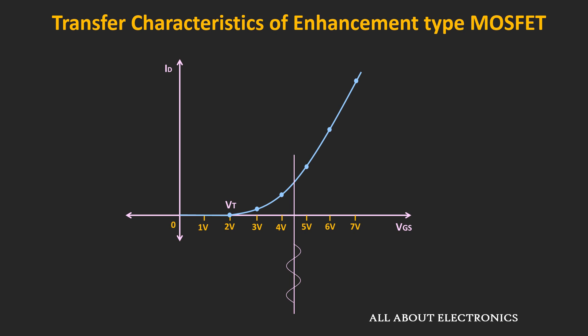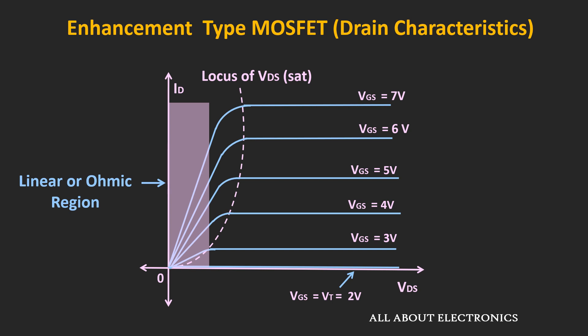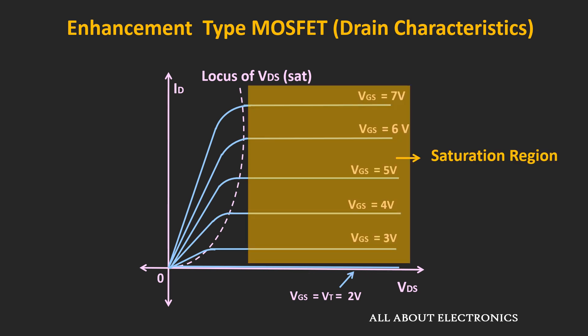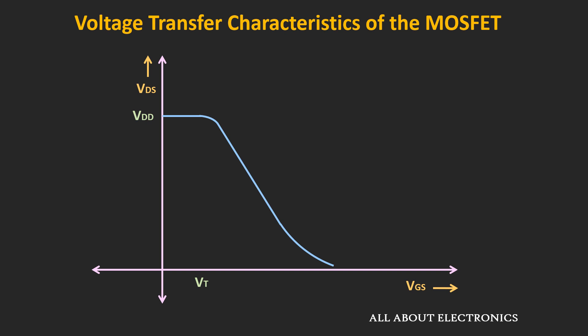Apart from this voltage Vgs, we also need to ensure the proper voltage at the drain terminal of the MOSFET. The MOSFET can be operated in three regions: the linear region or the ohmic region, the cutoff region, and the saturation region. Whenever we want to use the MOSFET as an amplifier, it needs to be operated in the saturation region. In this saturation region, even if there is an increase in the drain-to-source voltage, the drain current almost remains constant. So in this region, the MOSFET acts like a voltage-controlled current source — by controlling the voltage Vgs, the drain current can be controlled. To operate the MOSFET in this region, the voltage Vds should be greater than or equal to Vgs minus Vt. Using the voltage transfer characteristic of the MOSFET, we can understand more intuitively why the MOSFET should be used in the saturation region for amplification.